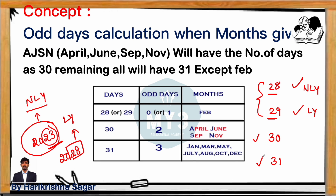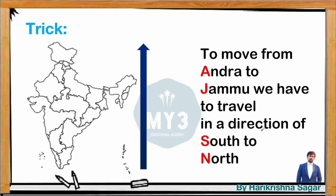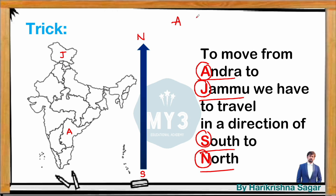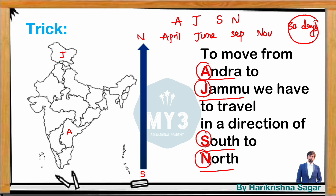Remaining months have 30 or 31 days. To remember which months have 30 days, use this trick: imagine travelling from Andhra to Jammu, going south to north — A, J, S, N. These letters indicate April, June, September, and November, which are the months having 30 days. All remaining months have 31 days, except February. To avoid confusion between June and January, remember that out of 12 months, the mid-month is 12 divided by 2 equals 6, so in the AJSN trick, J indicates June only.